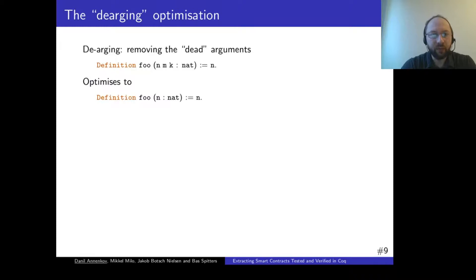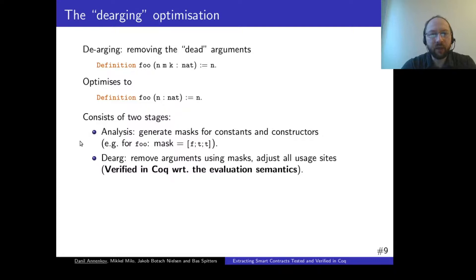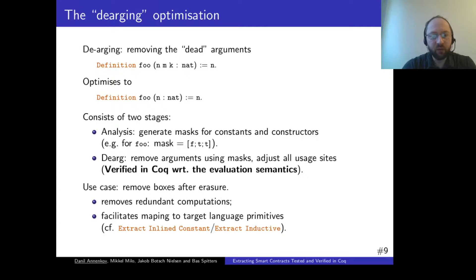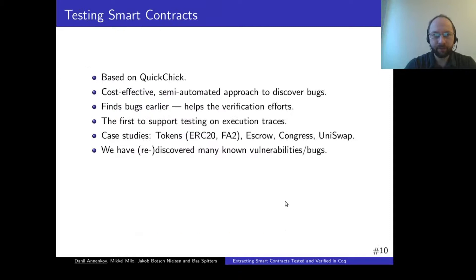We implement an optimization procedure which we call de-arguing, for removing arguments. In this example, one can see that arguments M and K are not used, therefore the function can be optimized. Our procedure consists of two stages: the first stage is the analysis stage, where we generate masks, and then these masks are used to perform the actual transformation called de-arguing. This transformation is verified in Coq with respect to the evaluation semantics. This optimization removes redundant computations represented by boxes in the resulting code, potentially leading to faster code, and also facilitates remapping to target language primitives, providing functionality similar to extract inline constant and extract inductive in Coq.